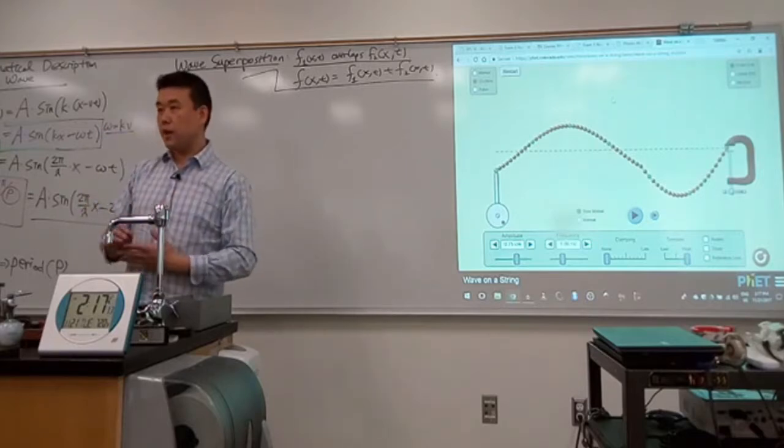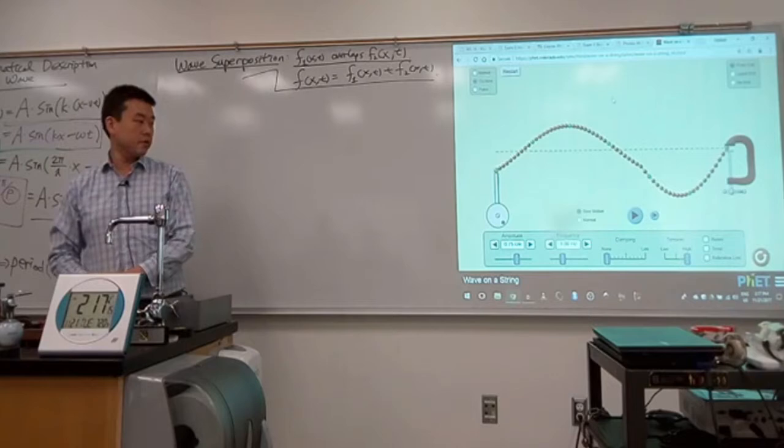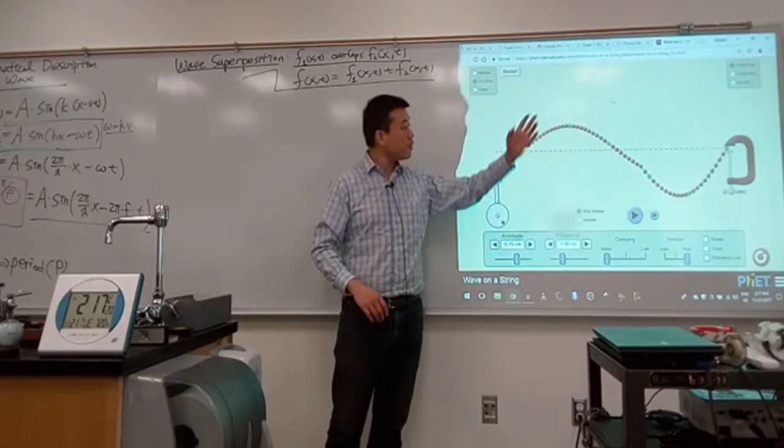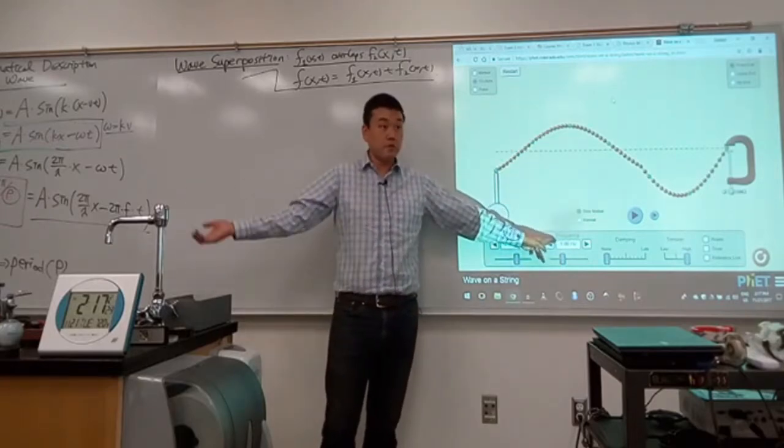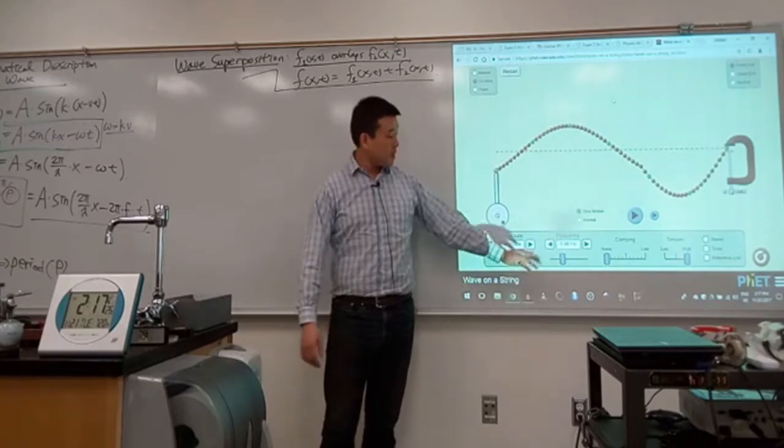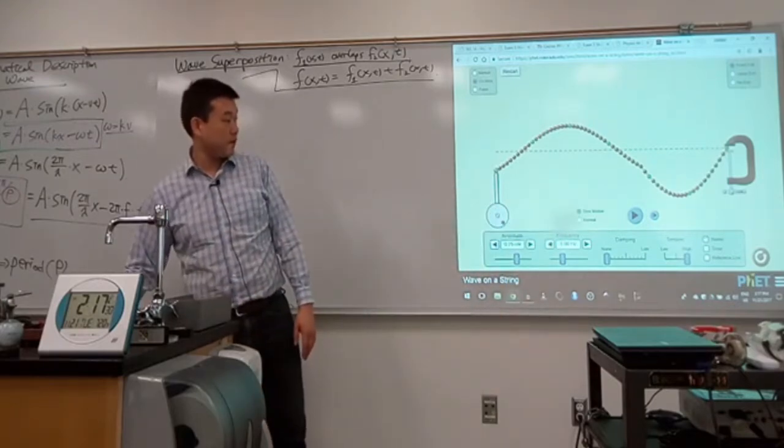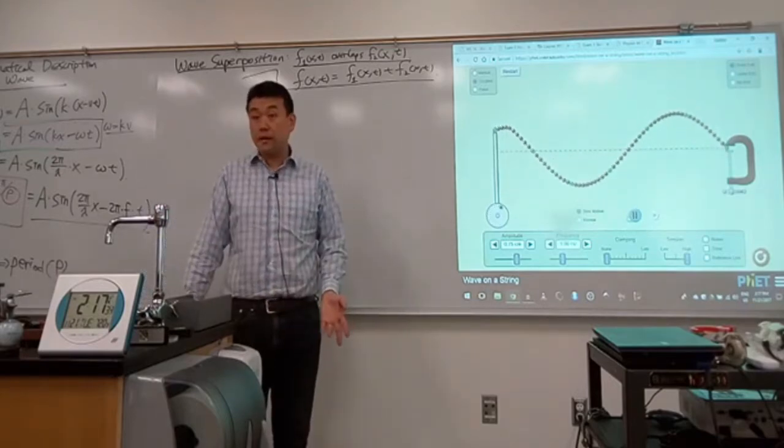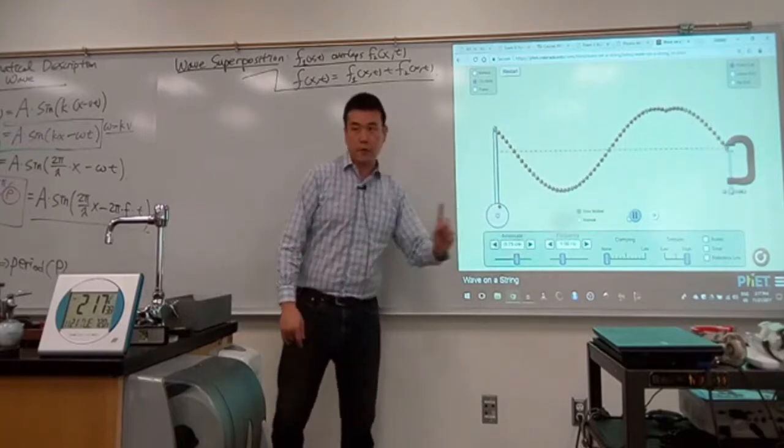Now with the standing wave, we need one more thing. We need to fix the frequency at a very particular value. So when we are talking about traveling wave, this frequency could be anything. There is no real condition on it. But here, when I set this frequency to be anything, you don't get standing wave. The shape you saw, that's not what we describe as a standing wave. So let me make a quick measurement to get the correct value of frequency.